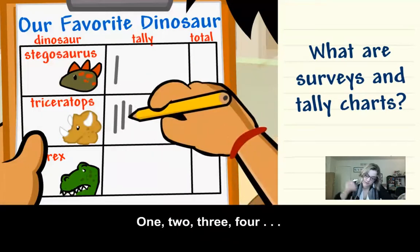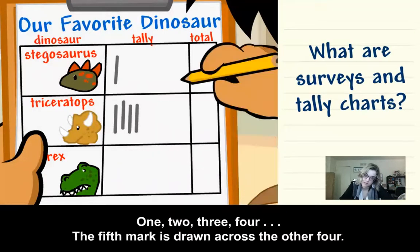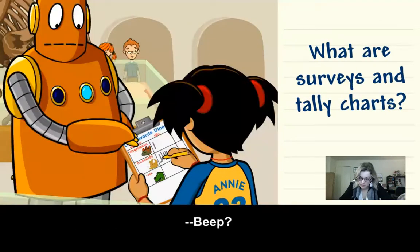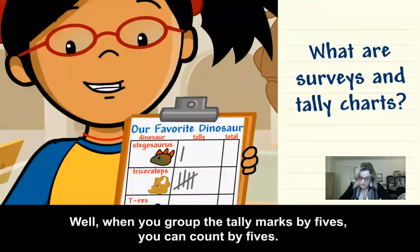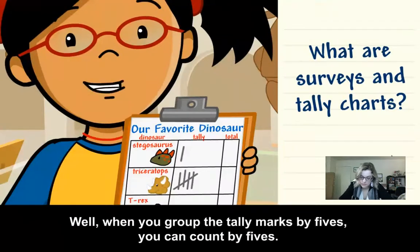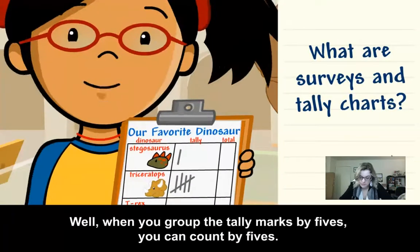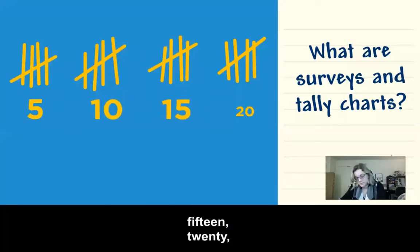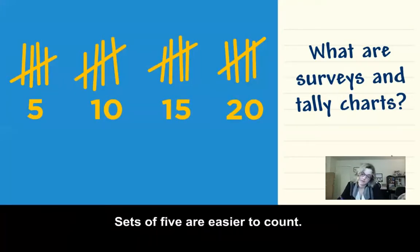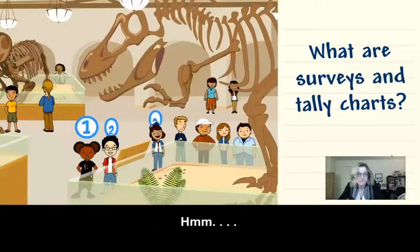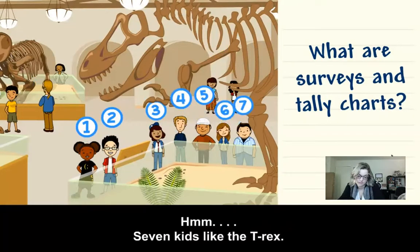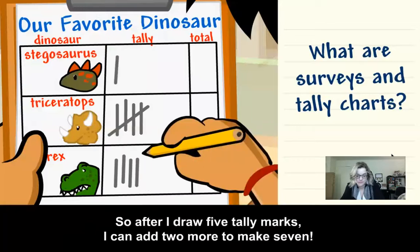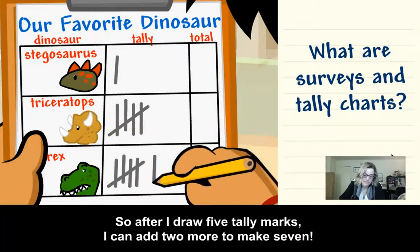One, two, three, four — the fifth mark is drawn across the other four. When you group the tally marks by fives, you can count by fives: five, ten, fifteen, twenty. Sets of fives are easier to count. Seven kids like the T-Rex, so after I draw five tally marks I can add two more to make seven.